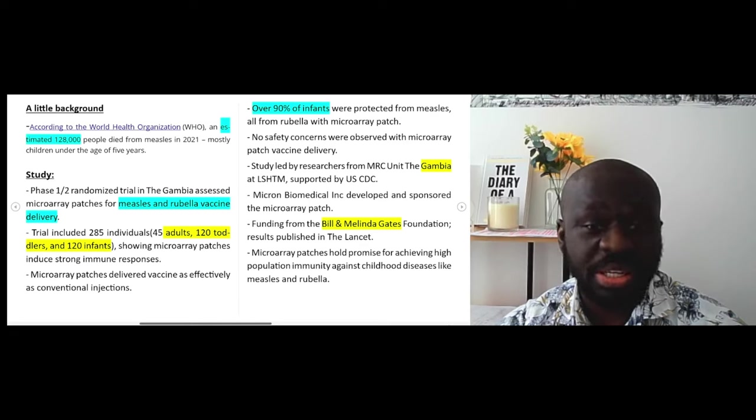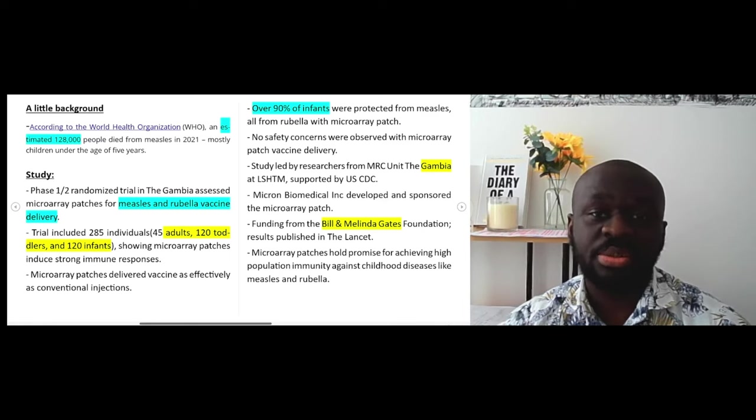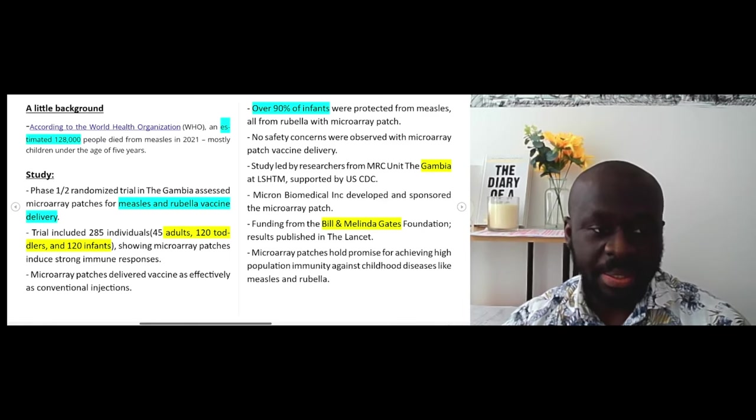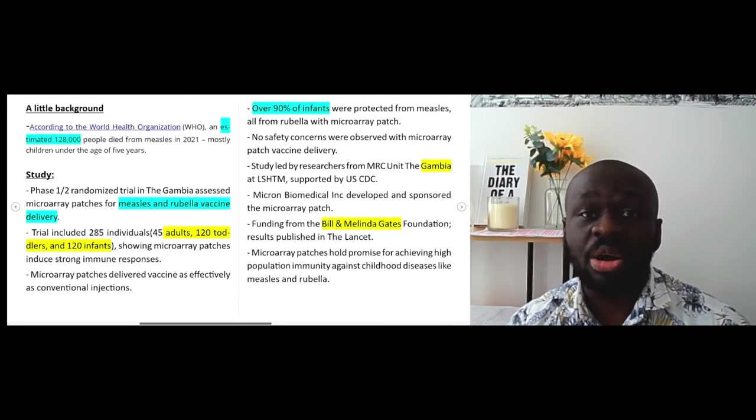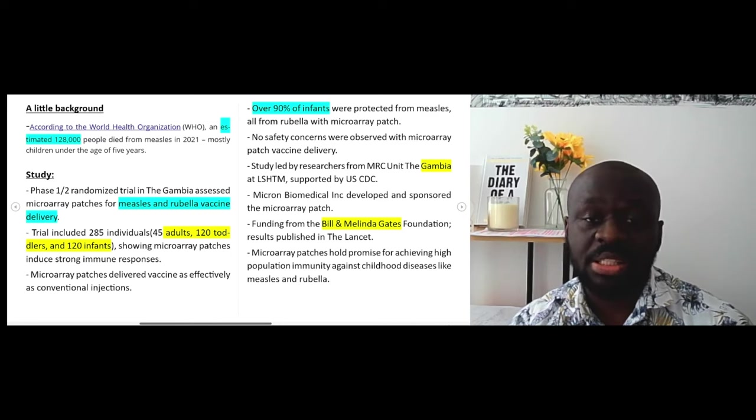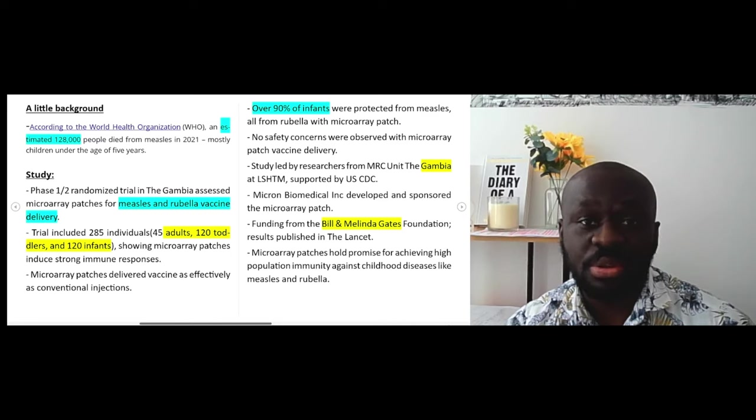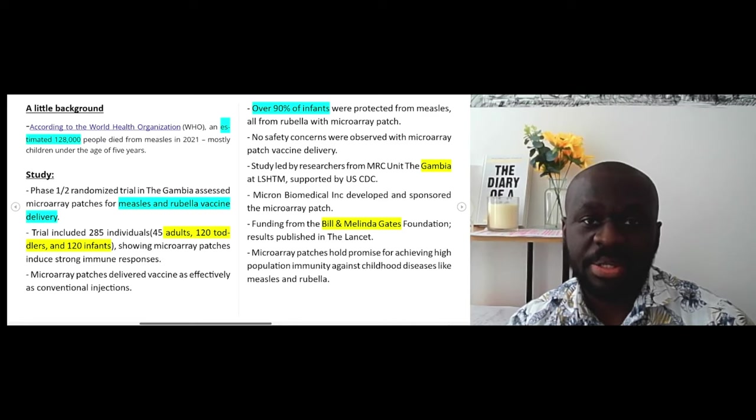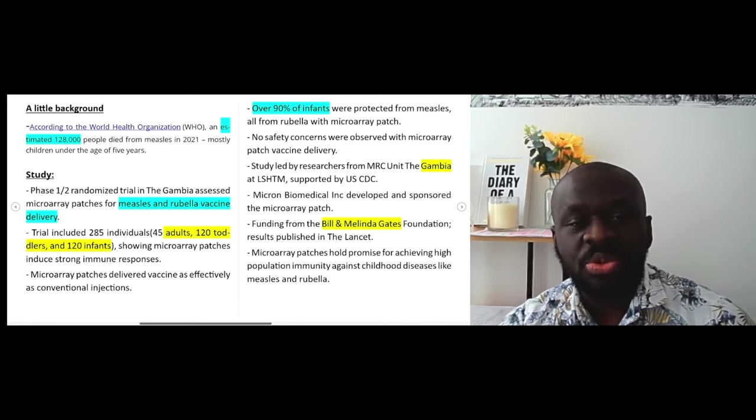So the study was conducted in the Gambia, as I said earlier, and it was a phase one study. So in vaccine development, usually there's a phase zero, phase one, phase two, phase three, depending on what the scientists are looking at, are they checking the safety, are they checking how efficacious or effective, are they looking out for side effects, are they mild, moderate, severe, life affecting side effects.